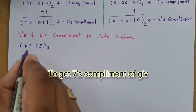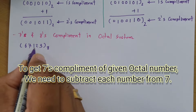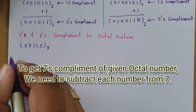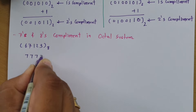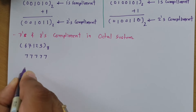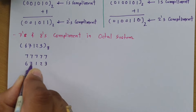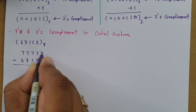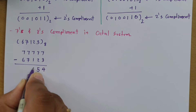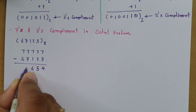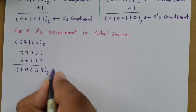To find 7's complement, subtract each digit of the given octal number from 7. Our number has 5 digits, so I write five 7's and subtract. For the number 6 7 1 2 3: 7 minus 3 is 4, 7 minus 2 is 5, 7 minus 1 is 6, 7 minus 7 is 0, and 7 minus 6 is 1. So the 7's complement is 1 0 6 5 4.